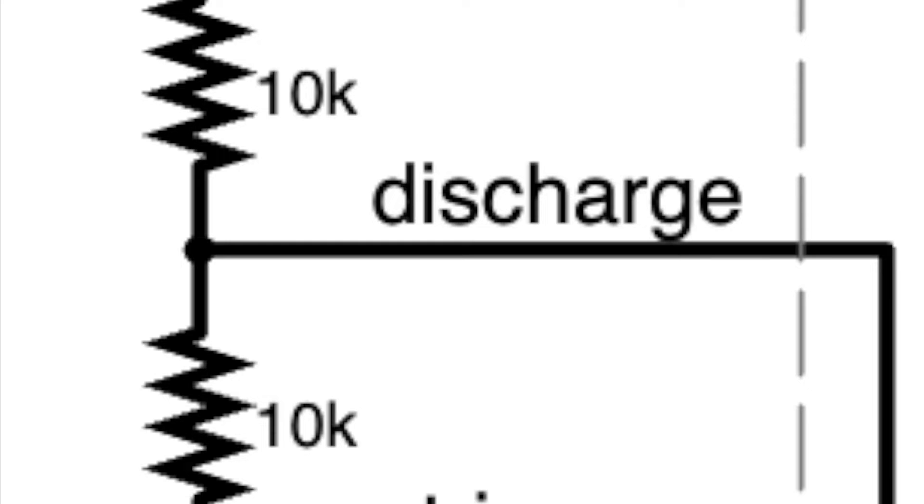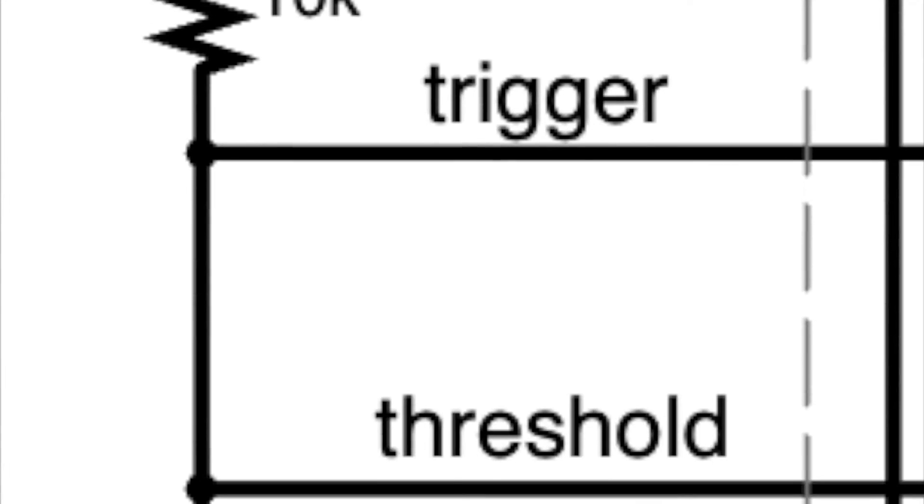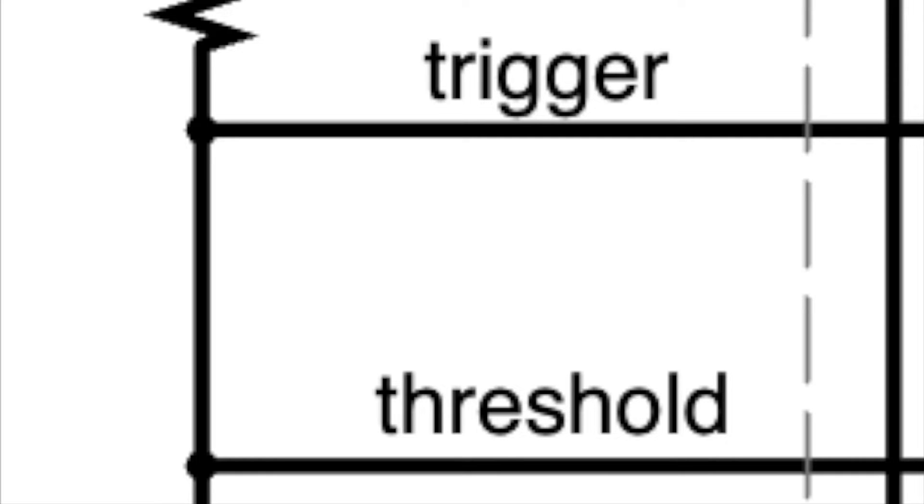The first output is to discharge, which is only open when the circuit is on low time. The second output is the trigger and threshold inputs of the 555.